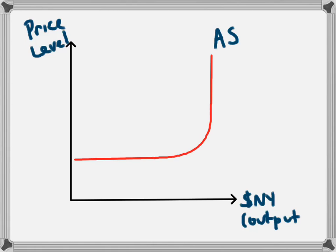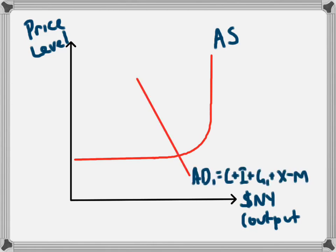Fiscal policy refers to the expected levels of government revenue and spending in the coming year, and it is outlined every year in the budget. In this model, the level of government spending equals G1, and that gives us an aggregate demand level of AD1.